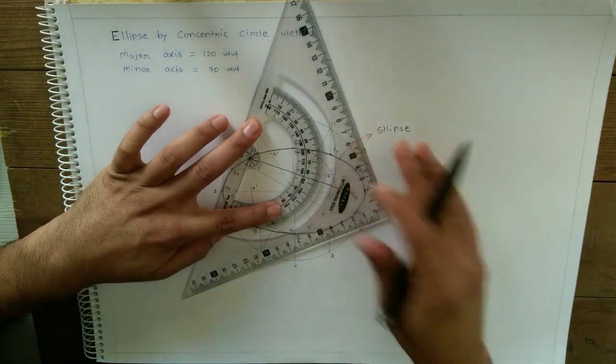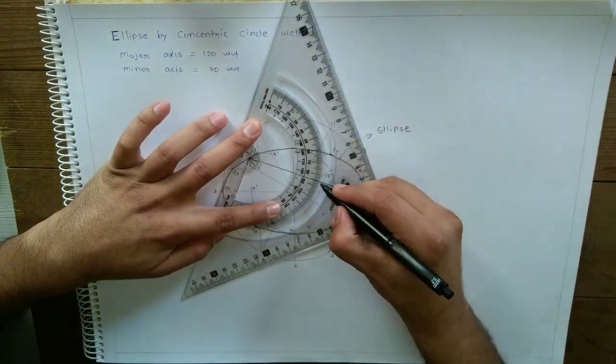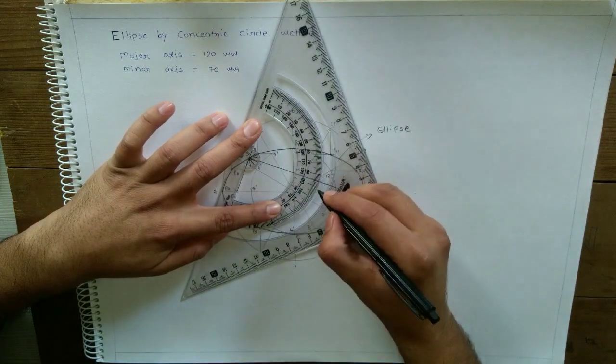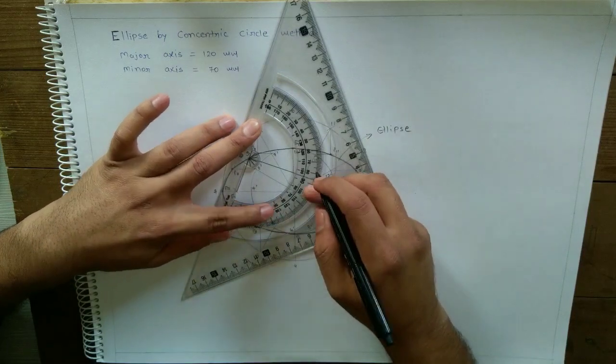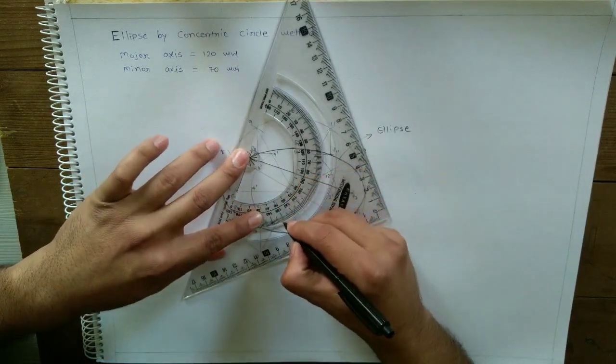It is 94 degrees. So 94 divided by 2, that is 47. So mark one, draw one line at angle of 47.